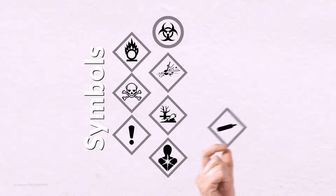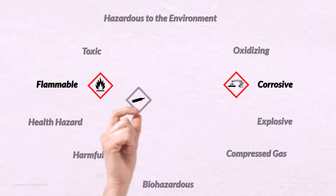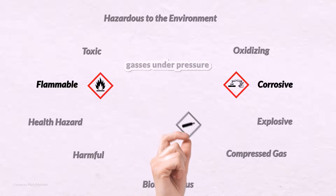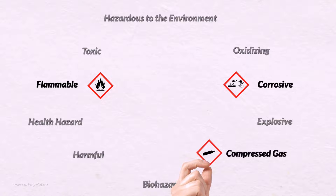The gas cylinder pictogram is used for gases under pressure or compressed chemical materials that may explode if heated, punctured, or dropped. Compressed gas.